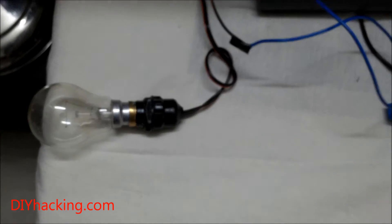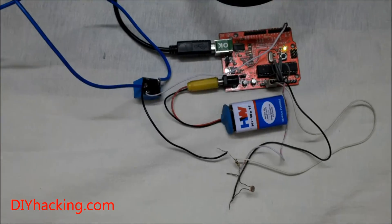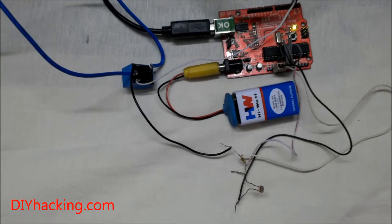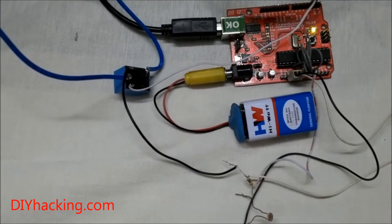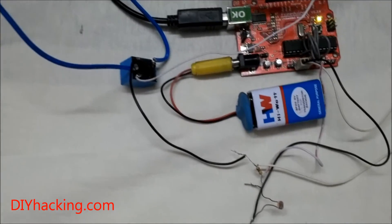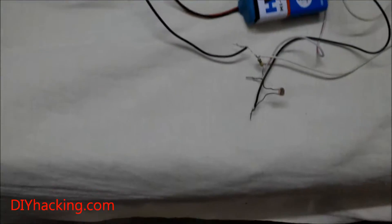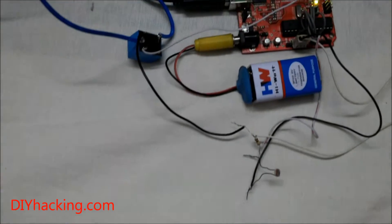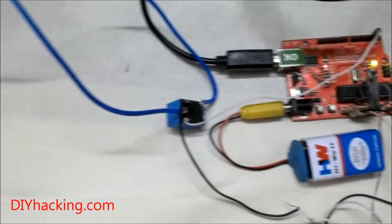The relay turns the light bulb on and off using commands from the Arduino. These are the basic components. To understand the connections in detail, check out the diagram I provided. Basically, the LDR detects the intensity of light, and if it's low, it turns the relay on.